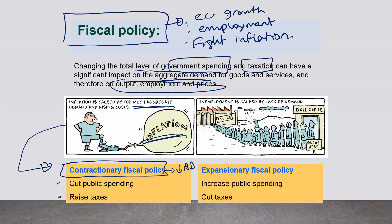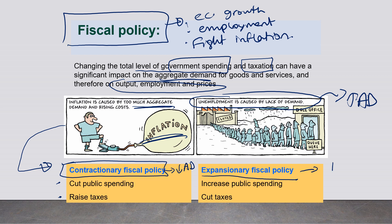When there is unemployment, it is caused by a lack of demand. To achieve employment, the government uses an expansionary fiscal policy to increase aggregate demand. The government can increase aggregate demand by increasing public spending and decreasing taxes in the economy.